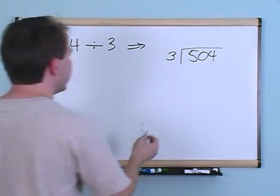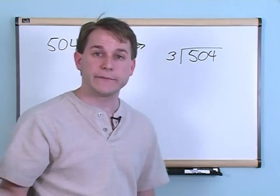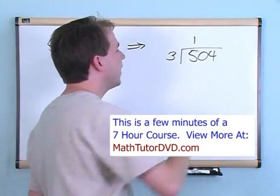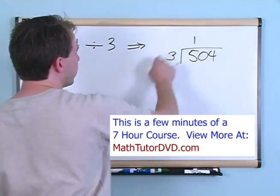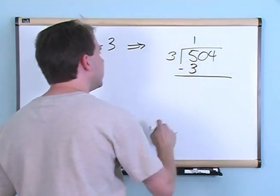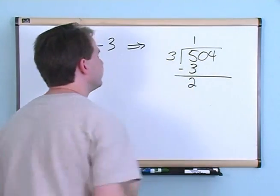Just like always, can 3 go into 5? Well, sure it can. 5 is bigger than 3. How many times will 3 go into 5? It's only going to go one time because 3 times 2 is 6, and that's too big. So 3 times 1. 3 times 1 is 3. I draw a line and do a subtraction. 5 minus 3 gives me 2.